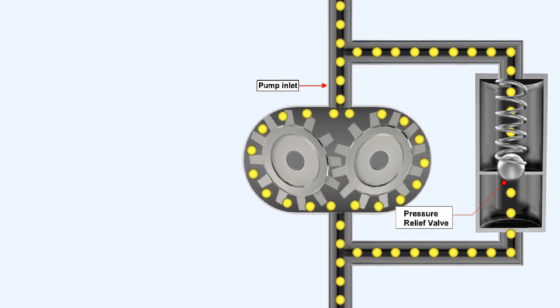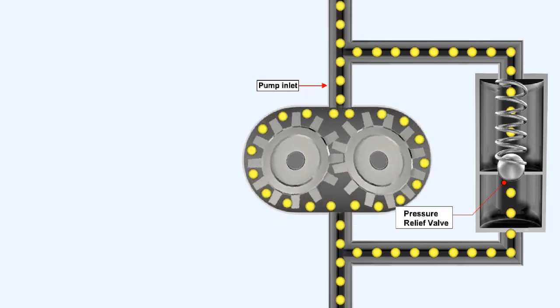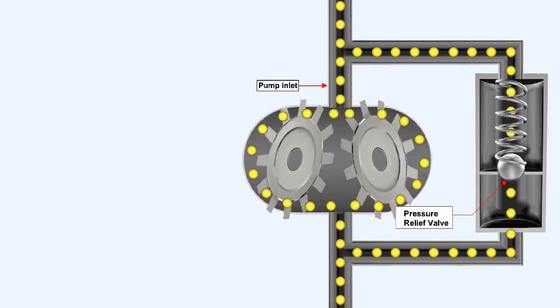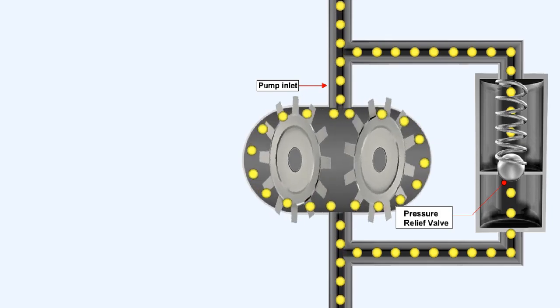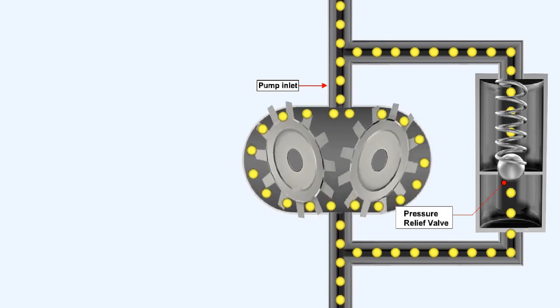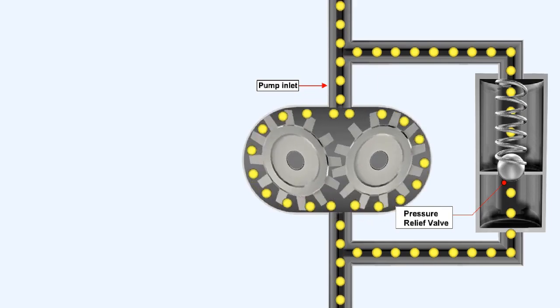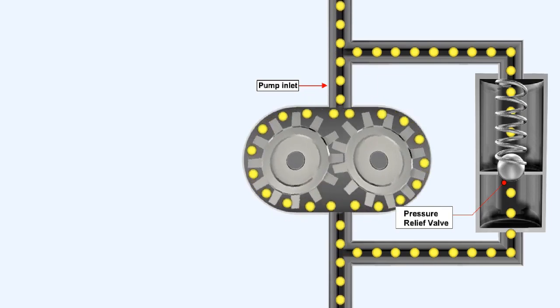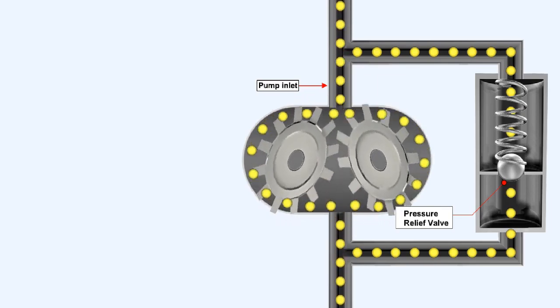The pressure relief valve, which gives its name to this type of lubricating system, is situated in parallel with the oil pressure pump. It limits the pump outlet pressure by diverting any excess volume back to the inlet of the pump, thus controlling the flow of oil to the bearing chambers.